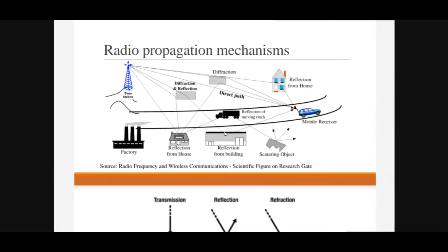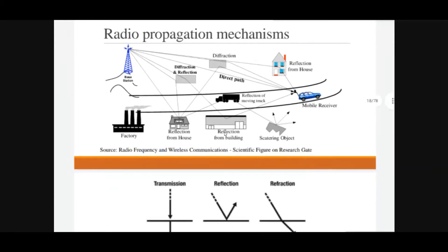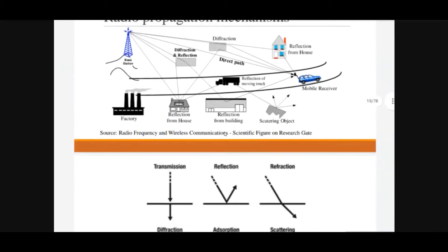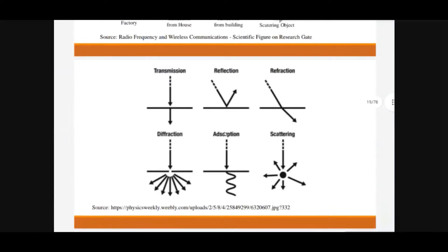Due to obstacles, the signal gets diffracted and reflected back. We have phenomena like diffraction and reflection. When there is no obstacle between the base station and the mobile receiver, the signal travels directly — that path is the line-of-sight or direct path. When there are obstacles, the signal gets reflected or scattered.